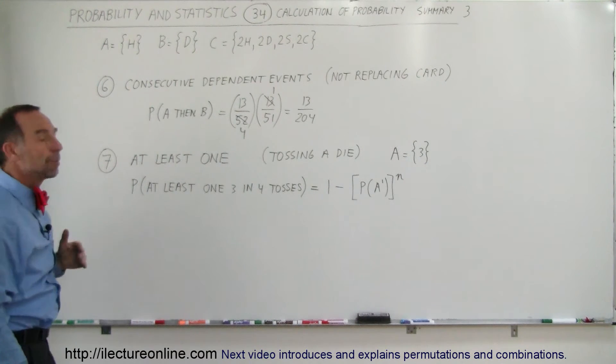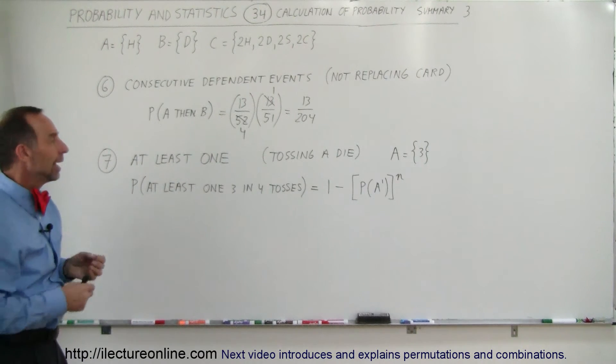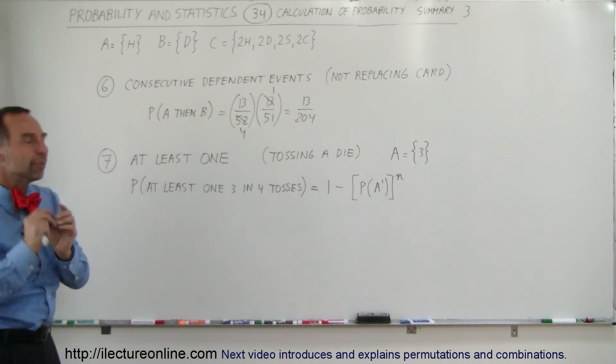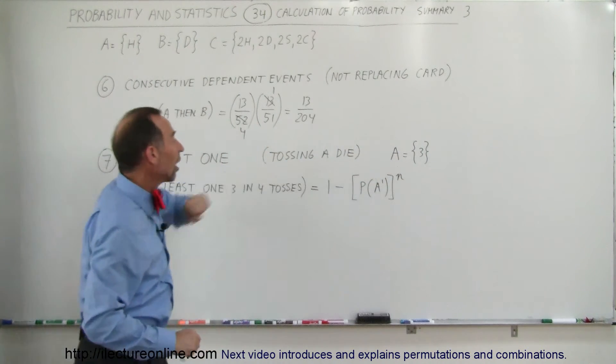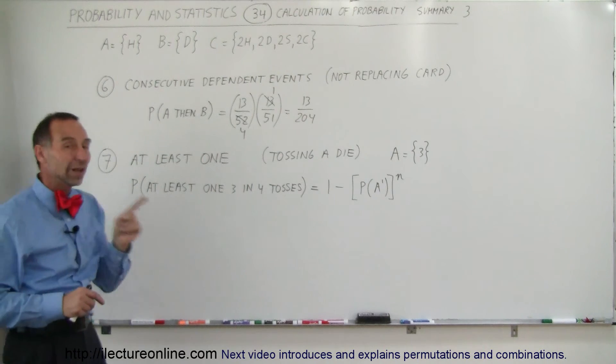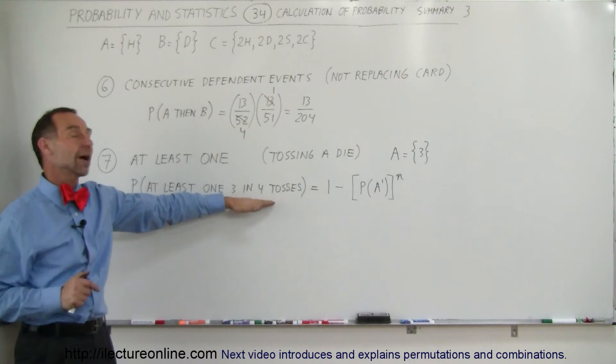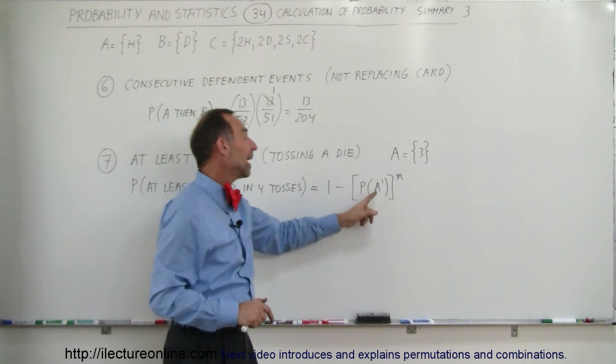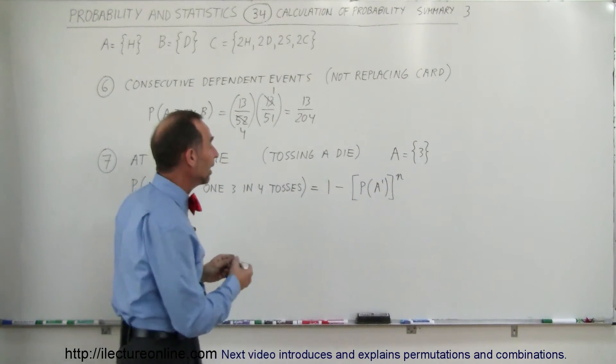The next type of probability calculation is where you say at least one. You're going to do a number of things and you want to see if out of all those things that you do, you get at least one of them to be a particular event. So let's say that the event A is a number 3 when you toss a die. Well, you want to know what the probability is of at least getting one 3, could be more, but at least one, if you toss the die four times. The answer is, it's 1 minus the probability of not getting an A to the nth power, where n represents the number of tosses.